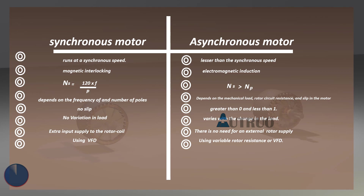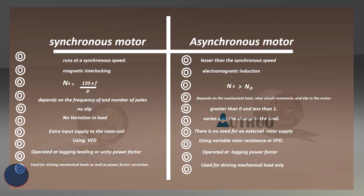For power factor correction, a synchronous motor can be operated at lagging, leading, or unity power factor. By varying the field excitation, it can be used to correct lagging or leading power factor. Asynchronous motors on the other hand always operate at a lagging power factor. For applications, synchronous motors can be used for driving mechanical loads as well as power factor correction. Asynchronous motors can only be used for driving mechanical loads. Induction motors are one of the most widely used motors in industries because the motor is cheaper when compared with synchronous motors.